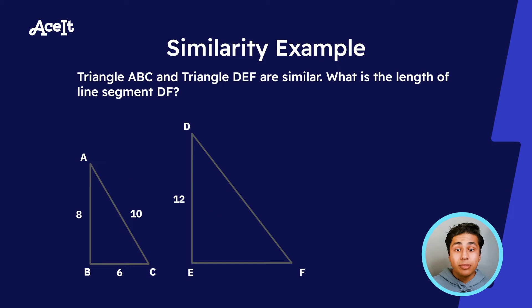Let's take a quick look at this example problem. Triangle ABC and triangle DEF are similar. What is the length of line segment DF? We're given all of the side lengths of triangle ABC and we're given one side length for triangle DEF. So let's use the ratios we just talked about.